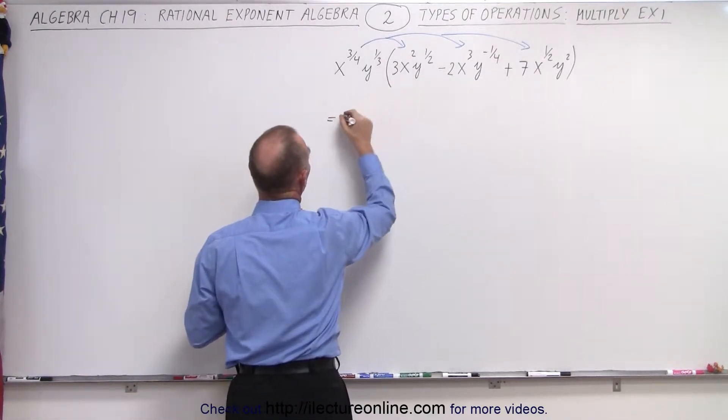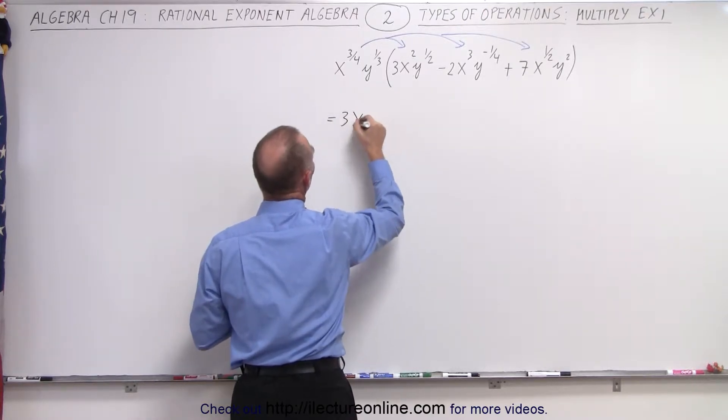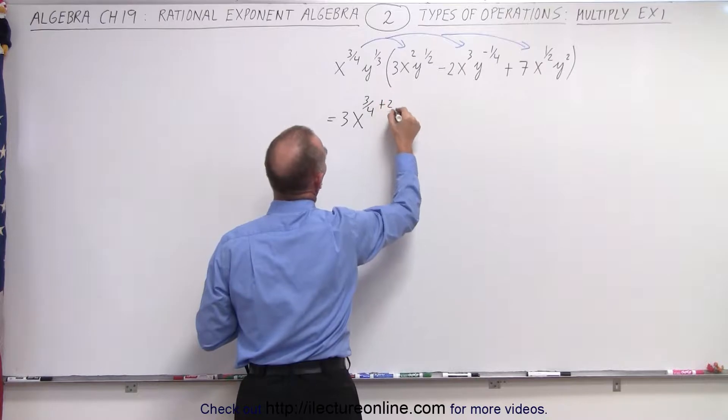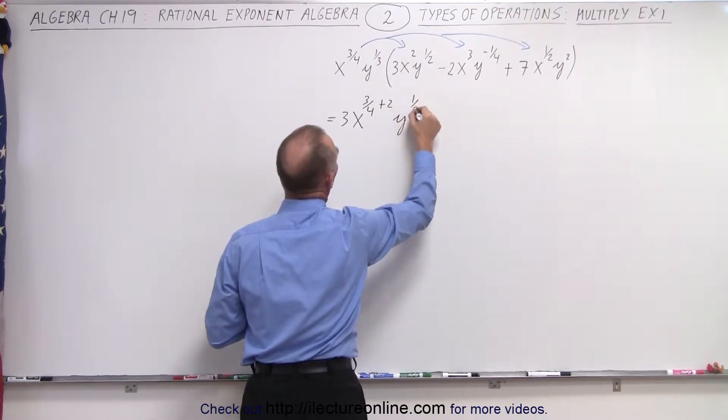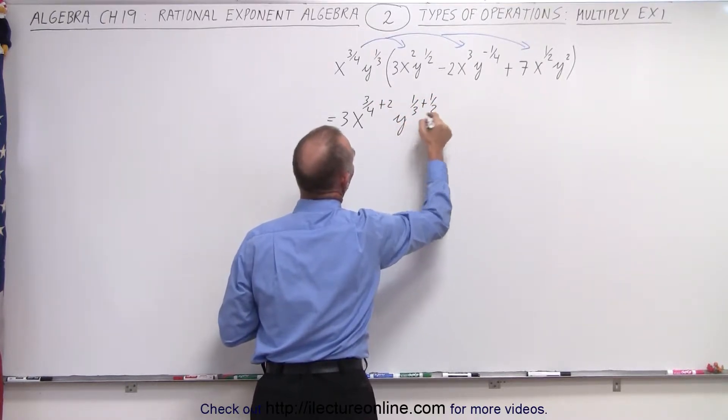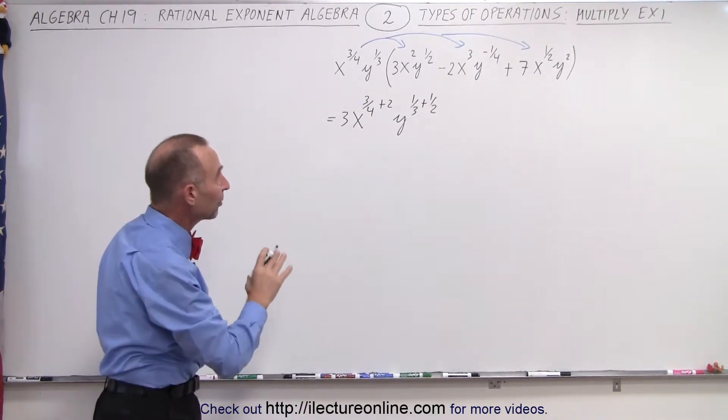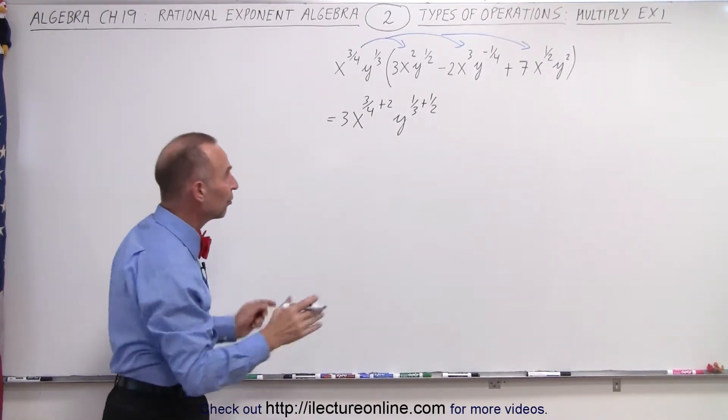So this becomes equal to three times x to the, now add exponents, we get three quarters plus two and y to the one third plus one half. It's not a bad idea to simply just write it out like that, to simply write the summation of the exponents since we're multiplying.